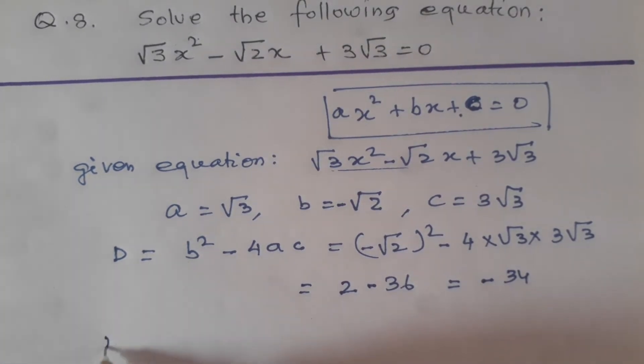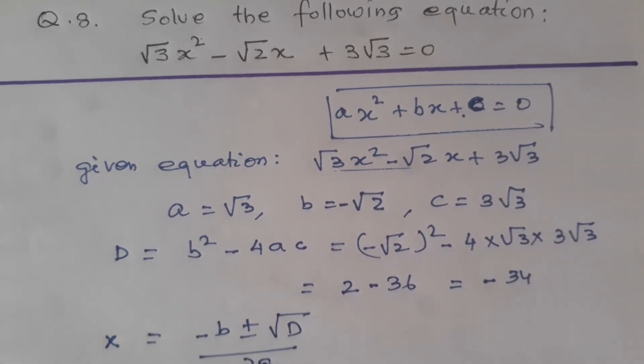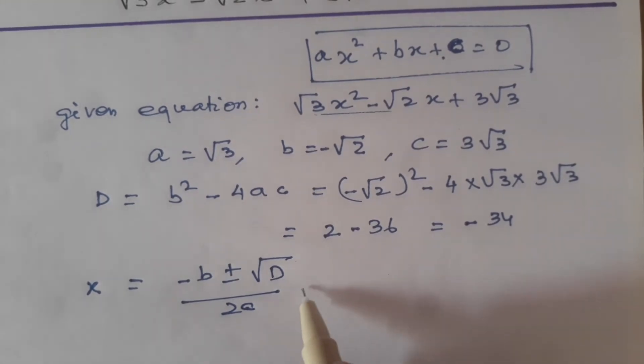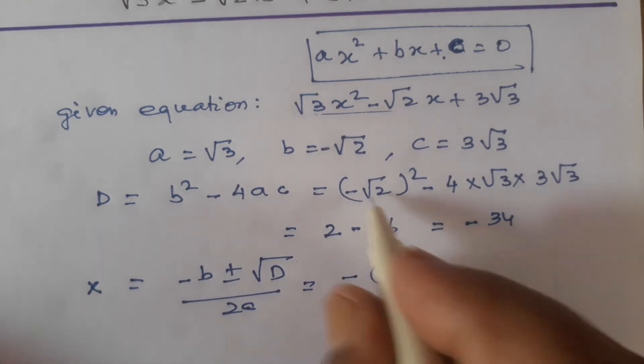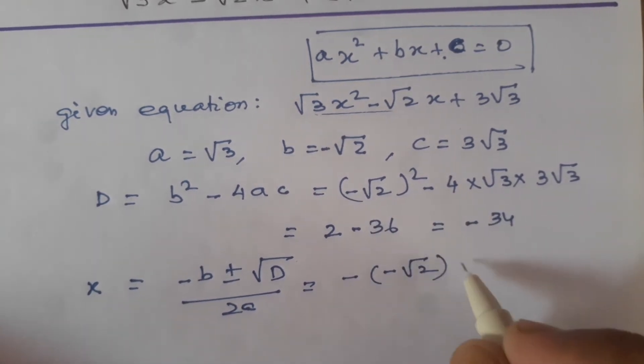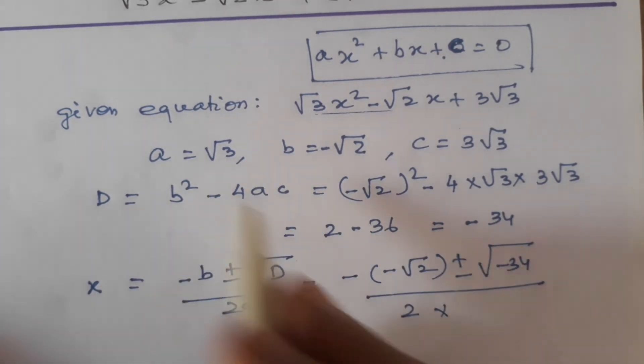Now to find X, we have another formula: X is equal to minus B plus minus root under D by 2 A. This is the formula, putting the value of these things, minus B means minus minus root 2 plus minus root under minus 34 by 2 into A is equal to root 3.